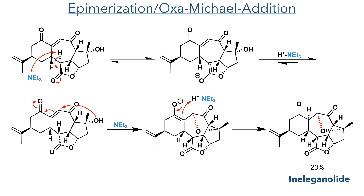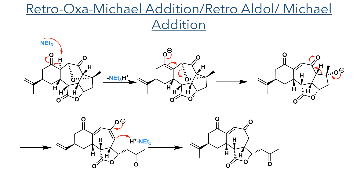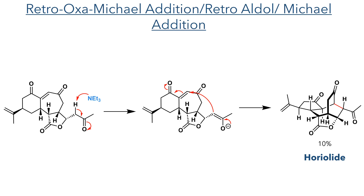This molecule has been quite an interesting target in the field of total synthesis, and I have covered this total synthesis on this channel before. Finally, they discovered that they could also transform this molecule into horiolide. This was done by reacting Scabralide B in a solution of triethylamine in acetonitrile and methanol at 60 degrees, however this time for 44 hours. This first forms ineleganolide, as we saw earlier, and then proceeds through a retro-oxa-Michael aldol addition, where an enolate is formed and the ether linkage is broken, generating an alkoxide intermediate. This alkoxide then undergoes a retro-Michael addition, breaking the five-membered ring and eliminating a ketone, while forming an enolate intermediate that is then reprotonated. The alpha position of this ketone is then deprotonated, and the resulting enolate undergoes an intramolecular Michael addition, forming a new carbon-carbon bond and producing horiolide in a 10% yield.